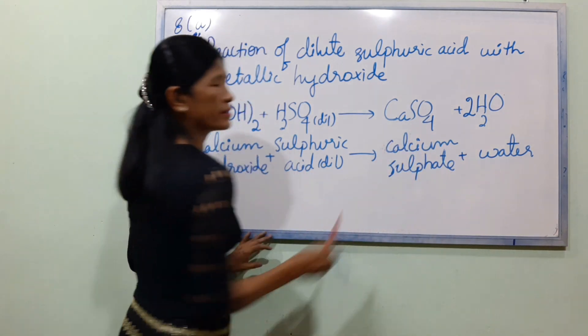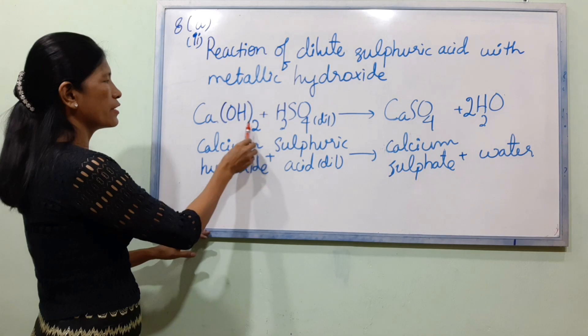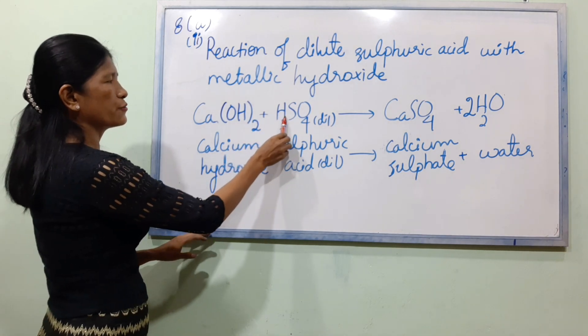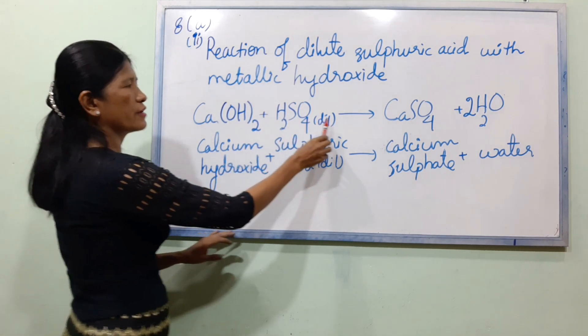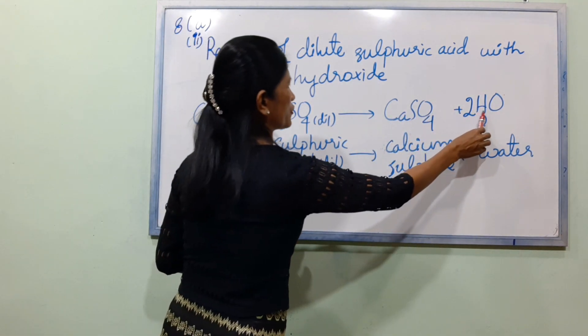H₂SO₄ in the field gives CaSO₄ plus H₂O.